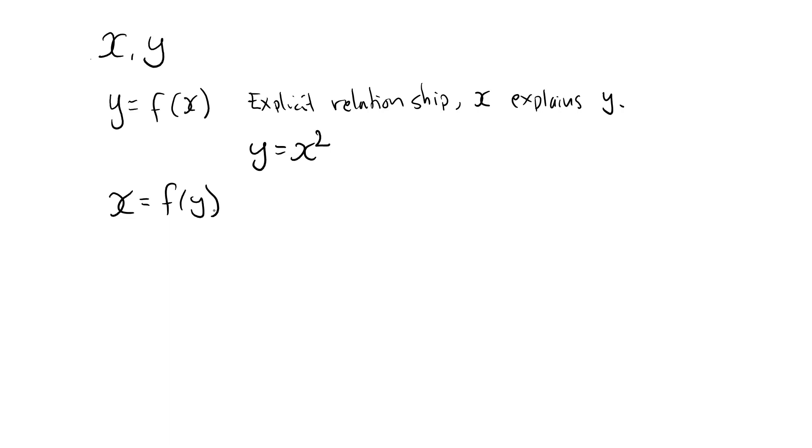I can easily calculate x. An implicit relationship, on the other hand, imposes a relationship or a restriction on these two variables, but it does not immediately allow you to find the value of one variable once you know the other.